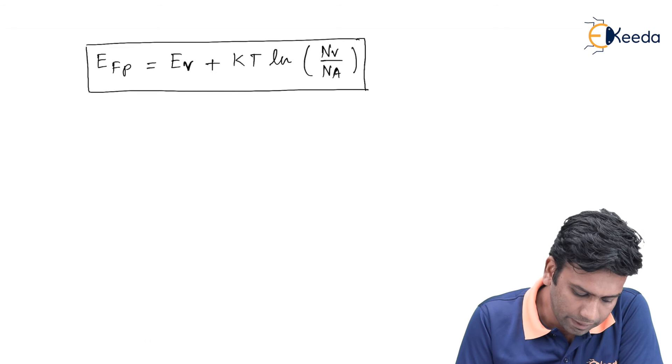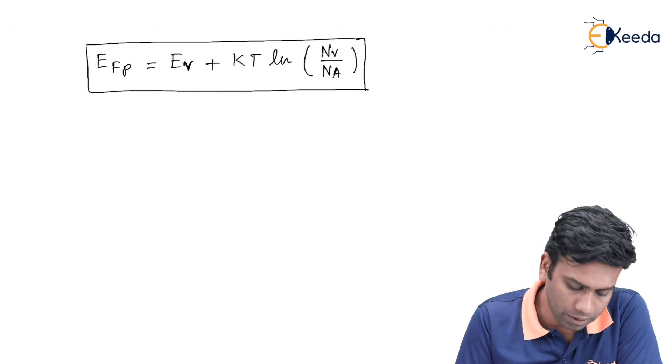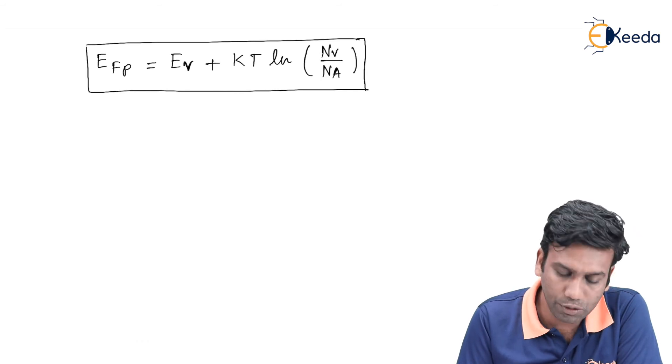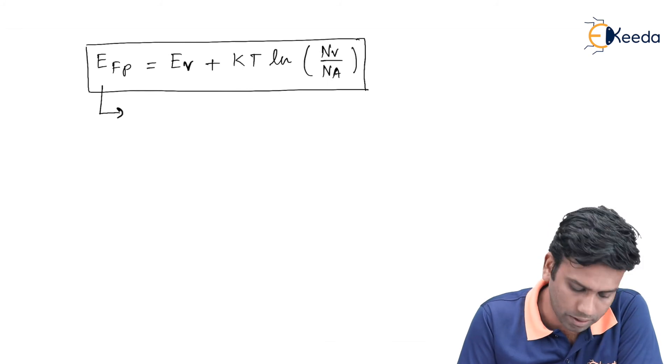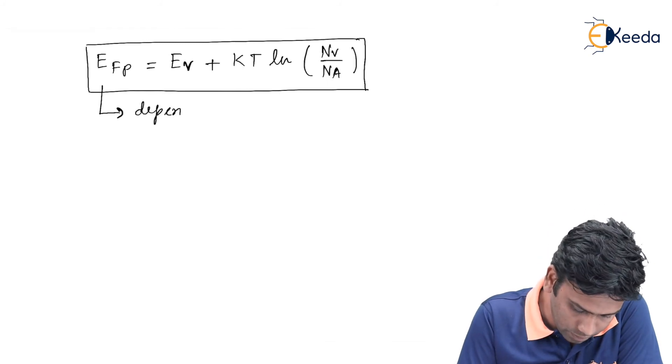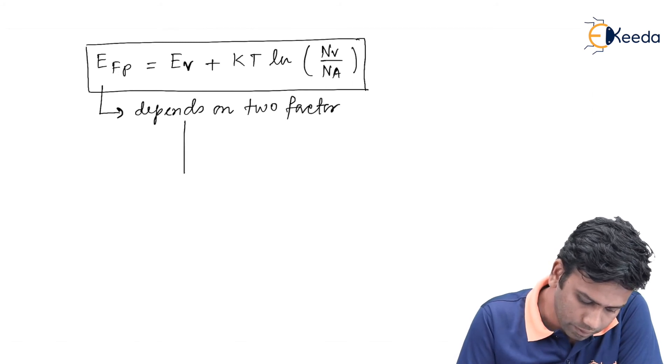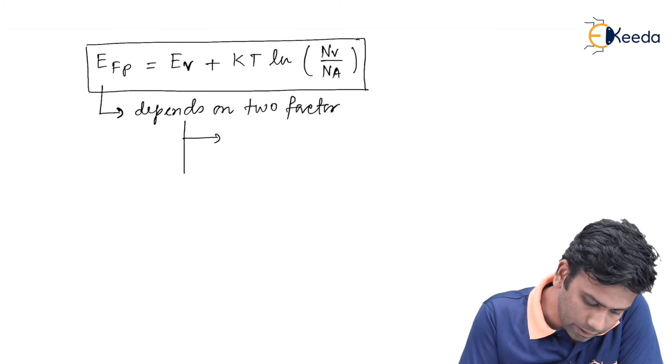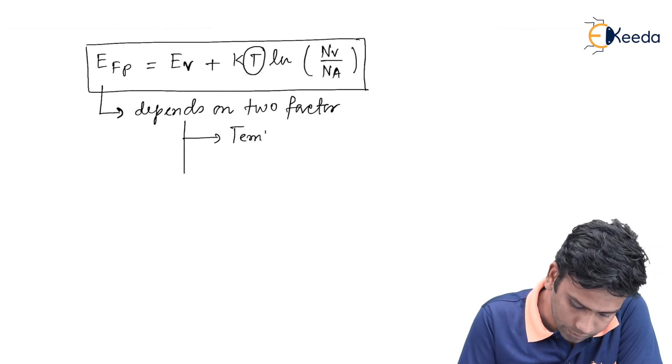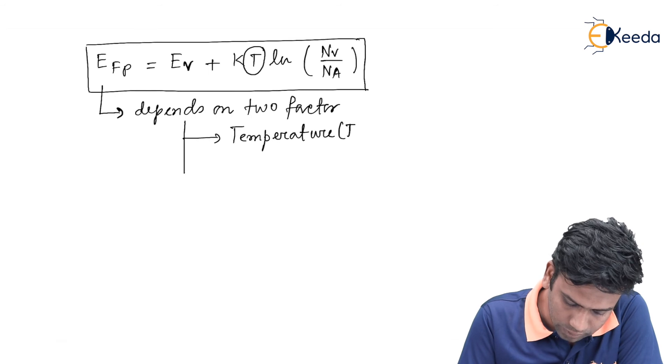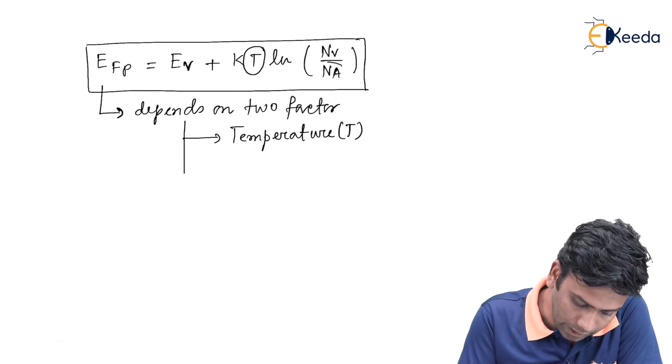We can say that this Fermi level position inside the p-type semiconductor from the equation, if we see, it depends on two factors. First one is this temperature parameter, and the second one is this Na parameter.